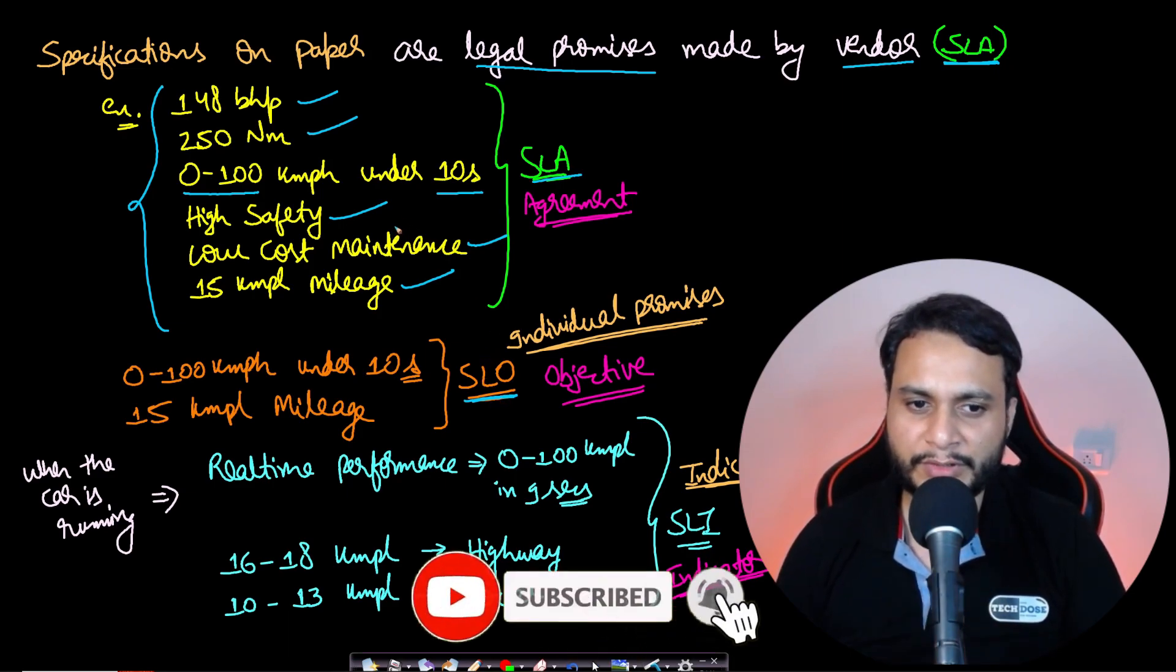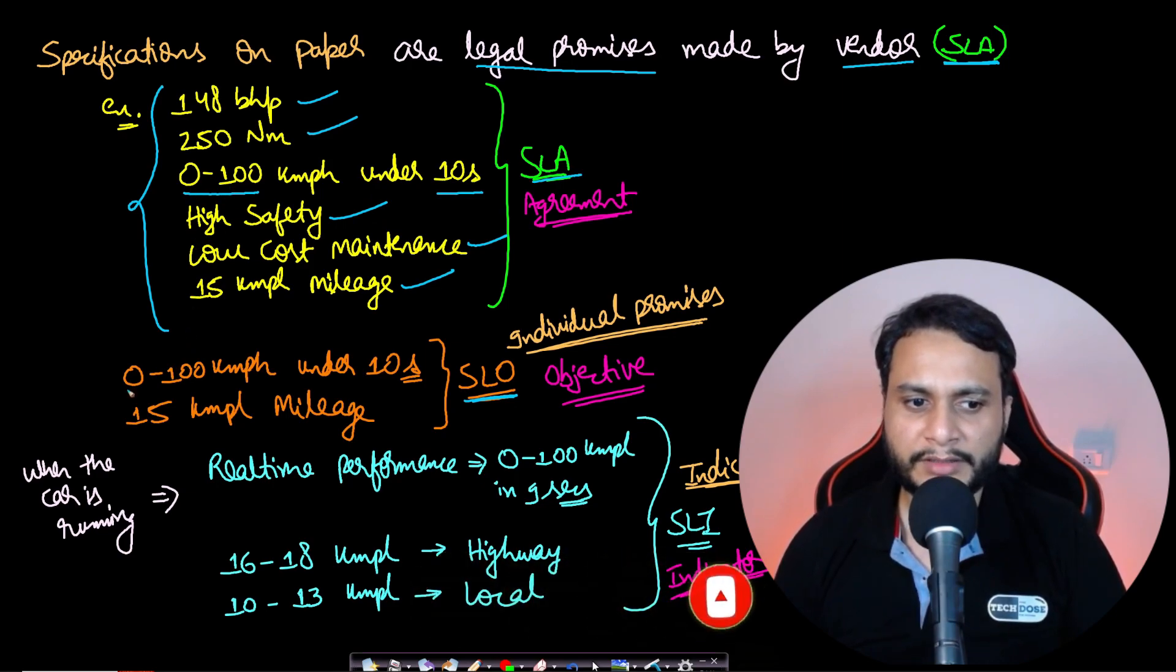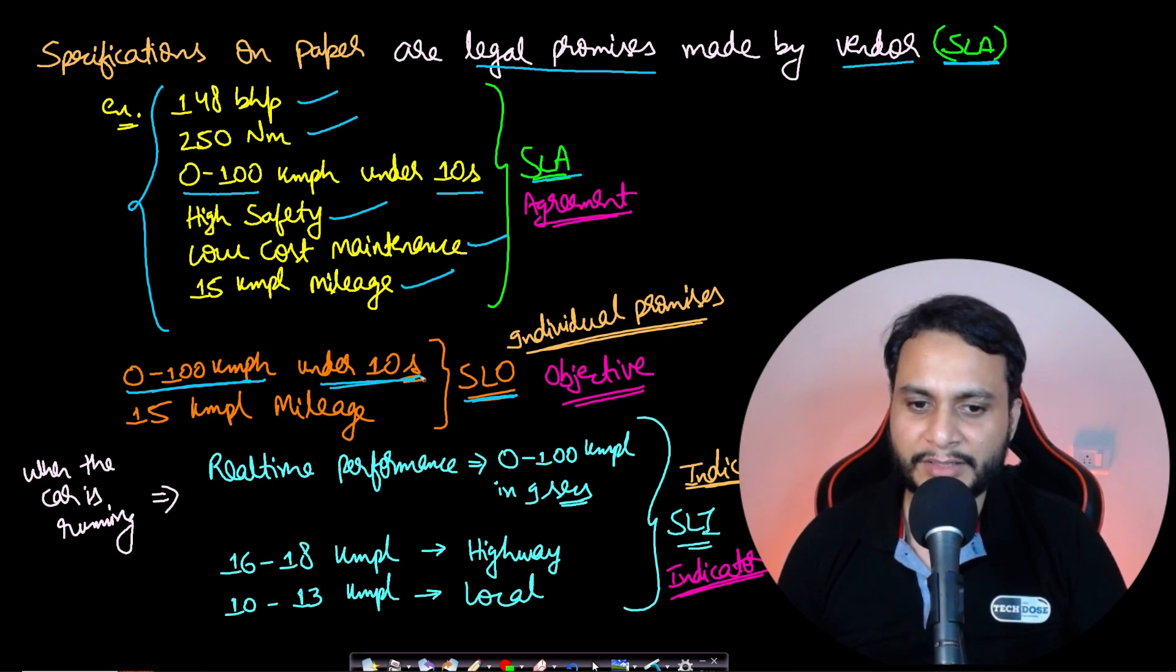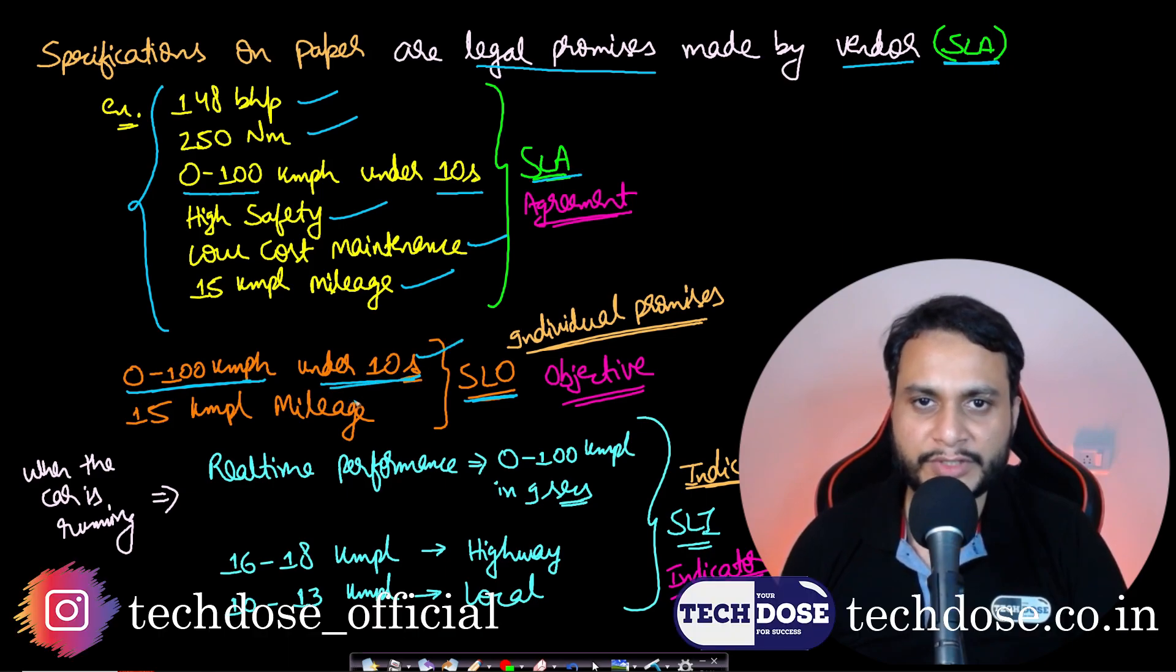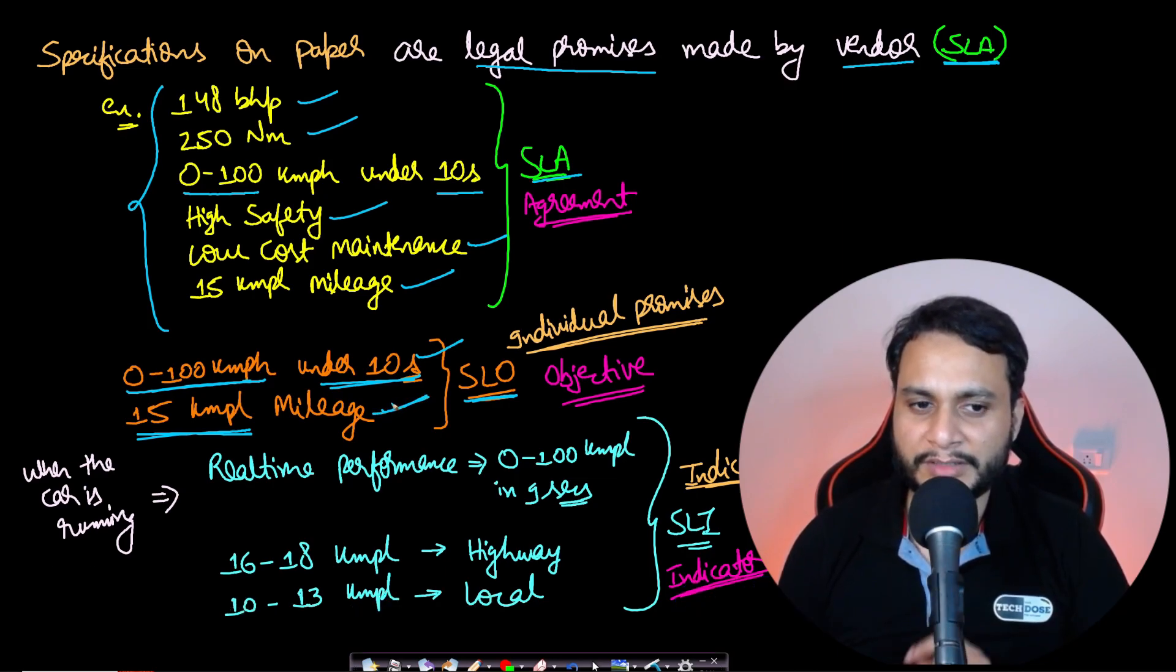One of them can be making the car fast enough in acceleration in such a way that it can achieve 0 to 100 kmph under 10 seconds. So this is one promise which they are focusing on, one objective. Then the second thing can be to increase the mileage and keep it around 15 kmpl mileage. This is another objective that they are focusing on.